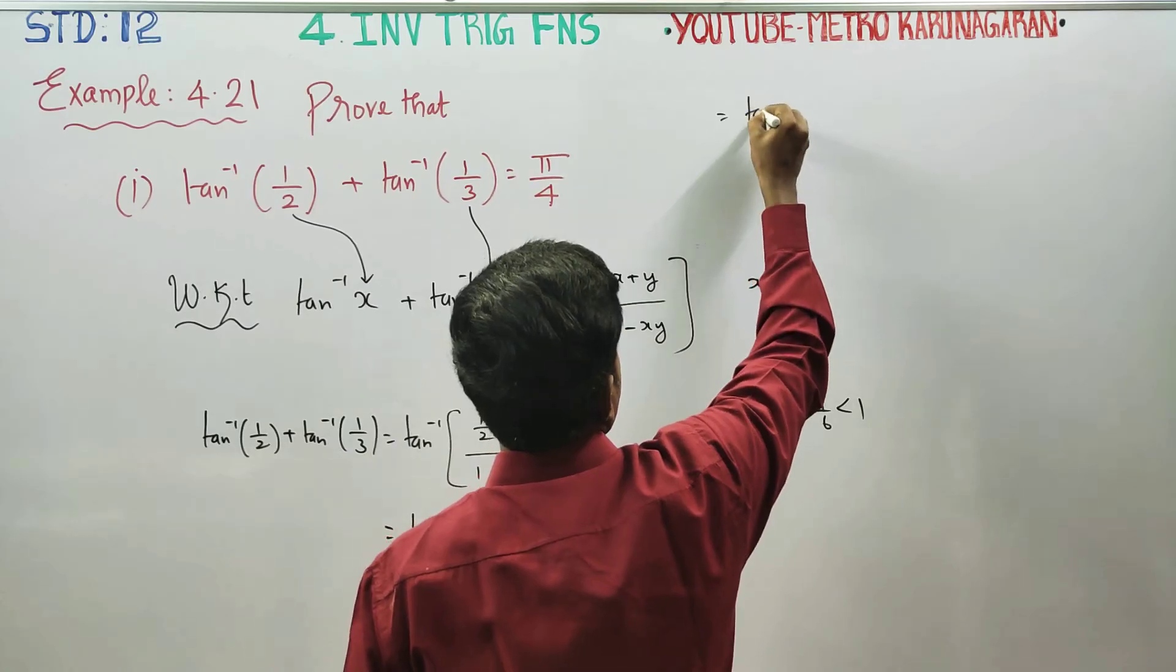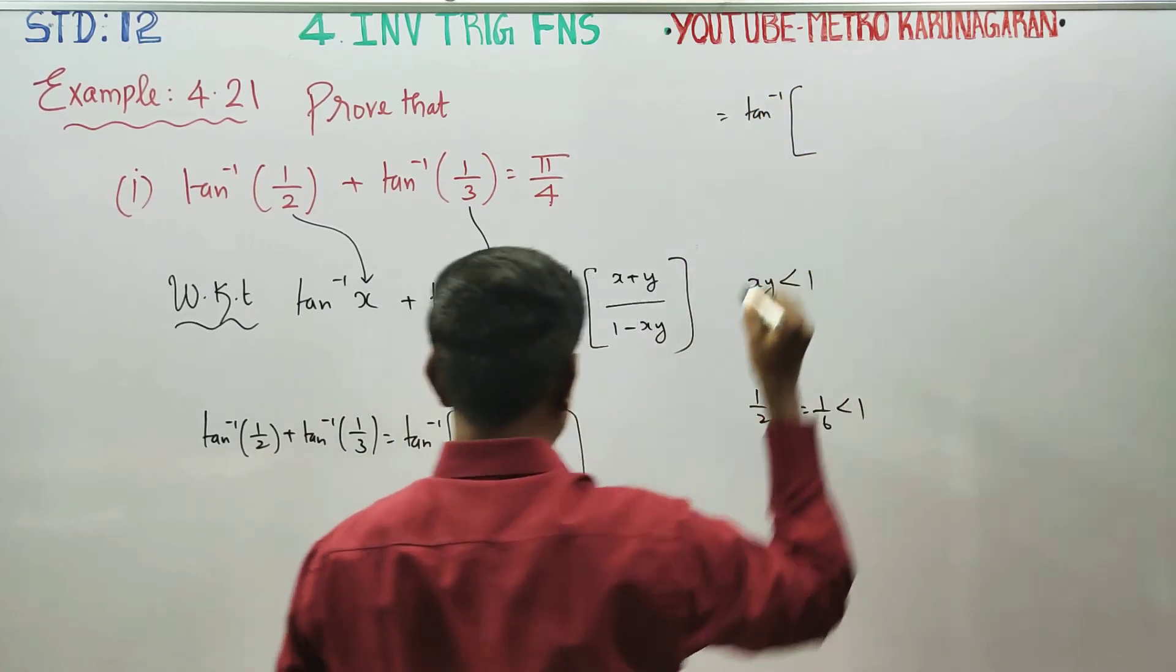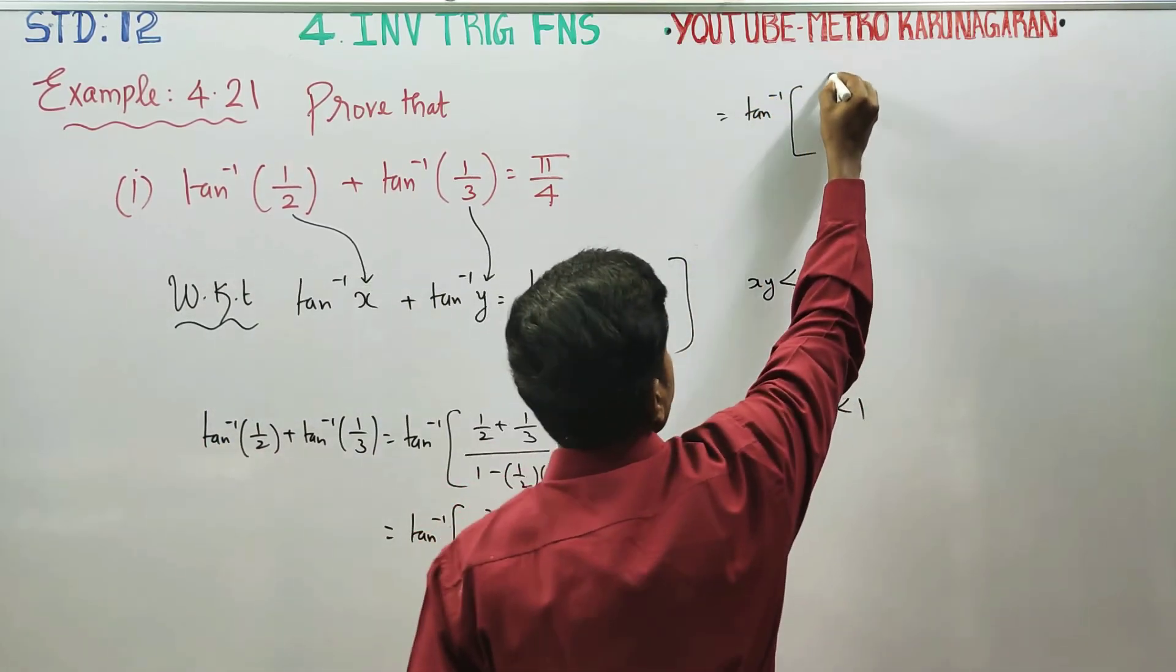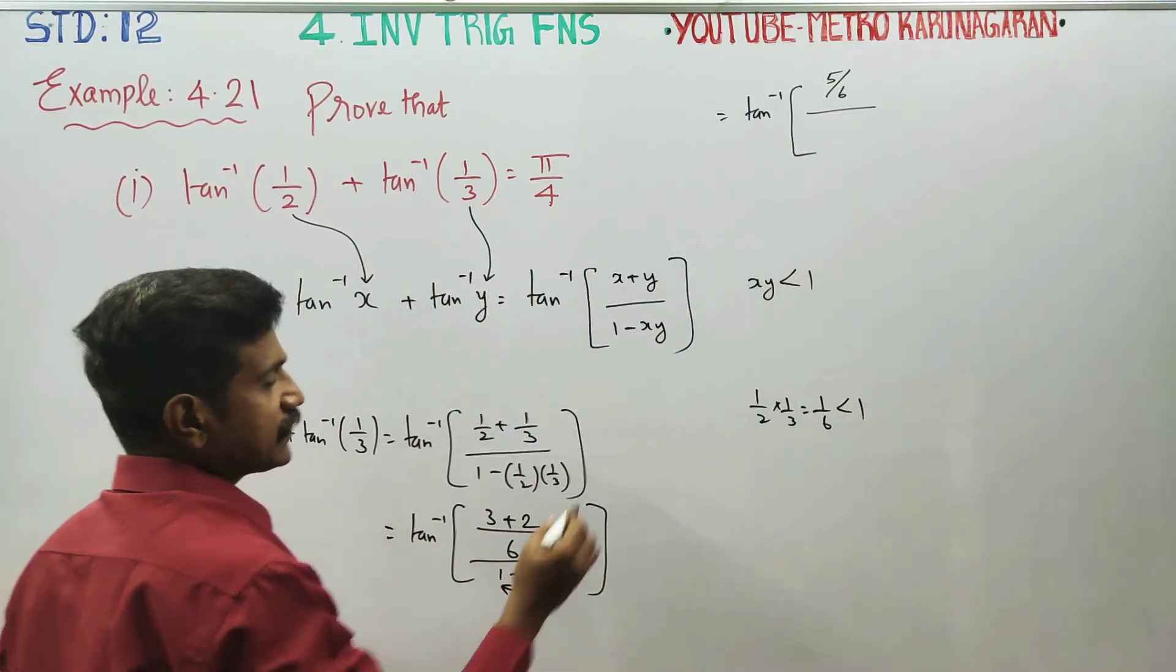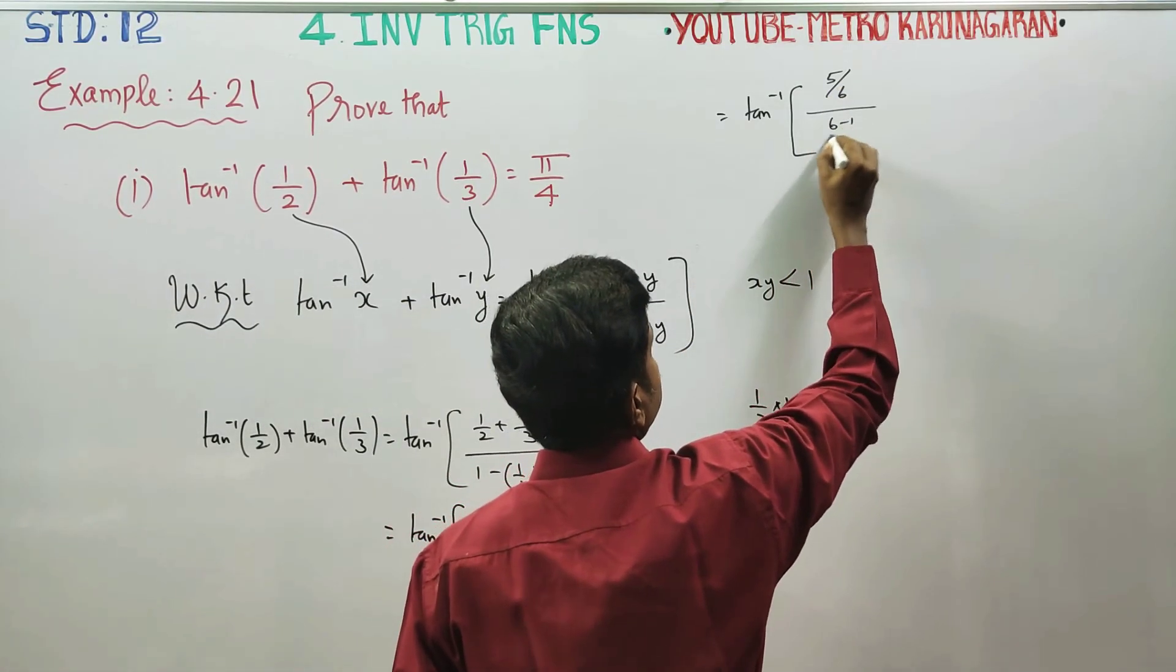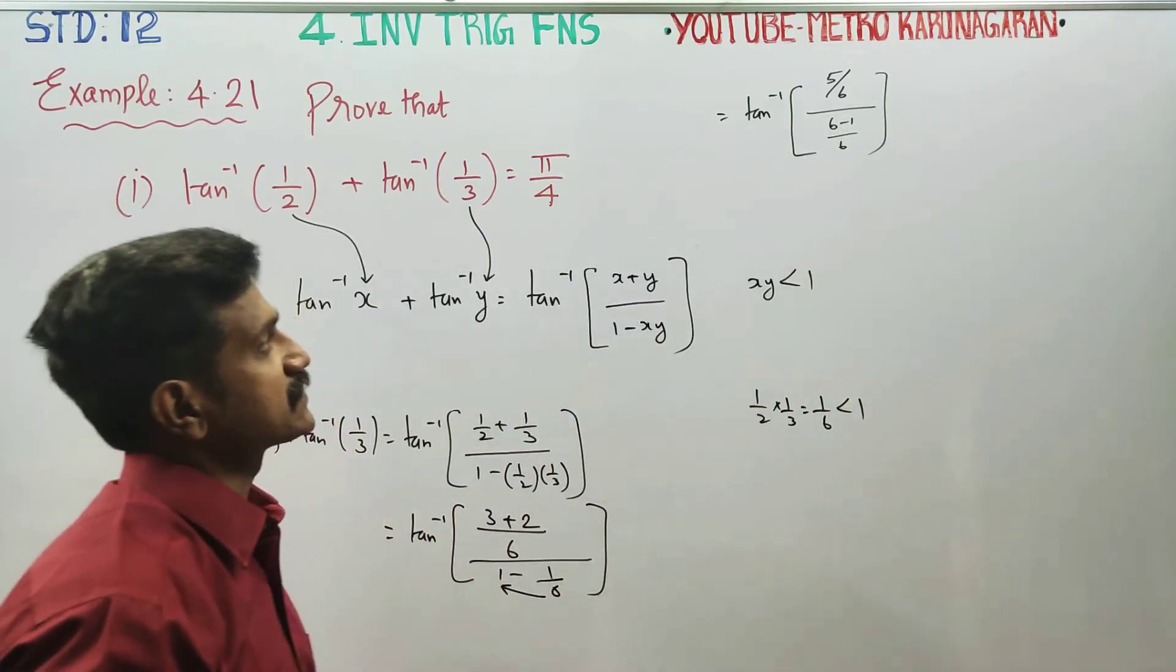Next stage, tan inverse of numerator is 5 by 6, denominator is 6 minus 1, 6 minus 1 by 6.